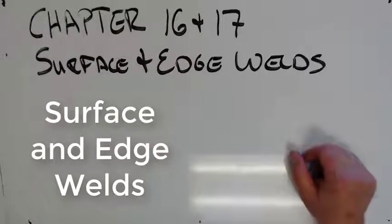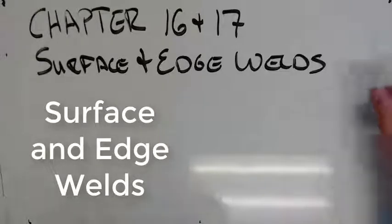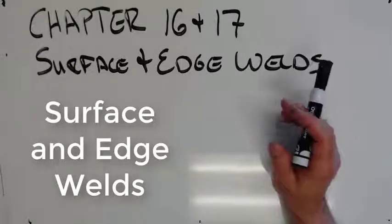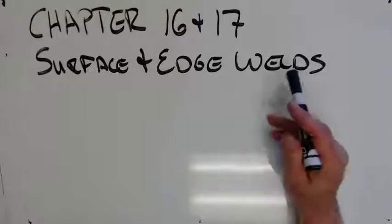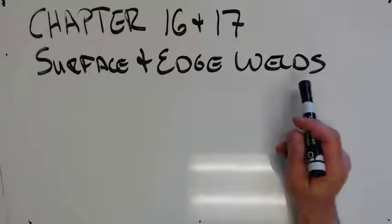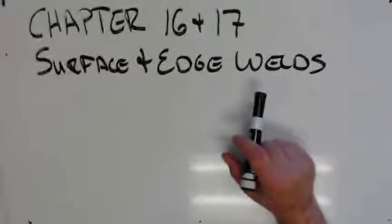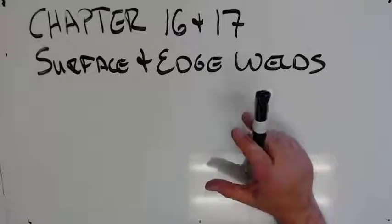Welcome to chapters 16 and 17 of our blueprint book. Today we're going to be talking about two different welds: surface welds and edge welds. They're very different but are lumped together just for convenience. First, we're going to start talking about surface welds, which in my world are a lot more common.